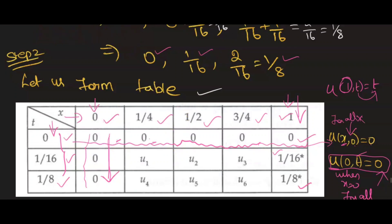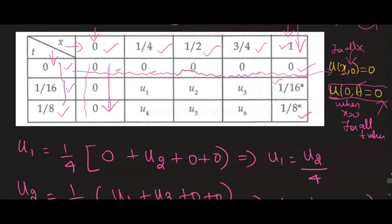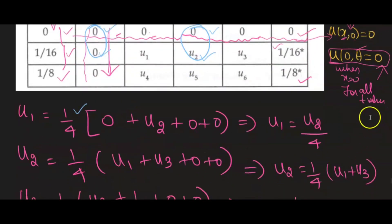Now after the tabular column, we are going to find the values u1, u2. u1 = (1/4) × [0 + u2 + 0 + 0], so u1 = u2/4. Similarly, u2 = (1/4) × [u1 + u3 + 0 + 0], so 4u2 = u1 + u3.